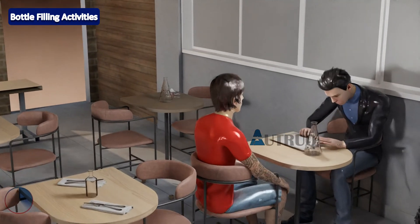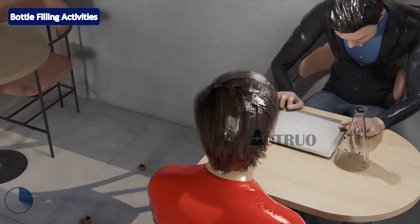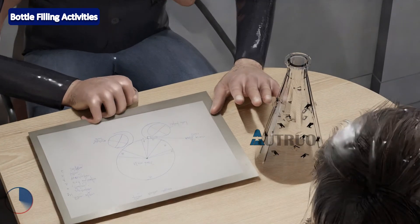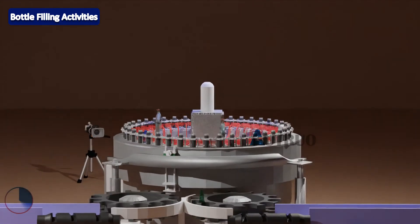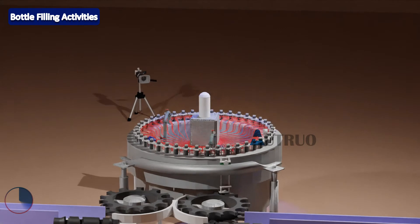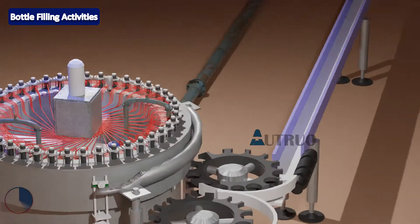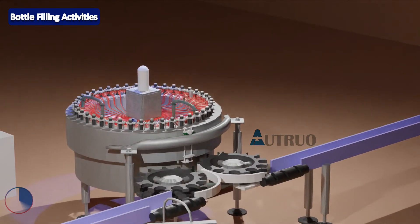Now for clarity's sake, we will divide the filler into three: the infeed star wheel, the filler main bowl, and the discharge star wheel. The infeed star wheel is used to transfer the bottle from a moving conveyor to the filler, while the discharge star wheel is used to transfer the bottle to the moving conveyor.